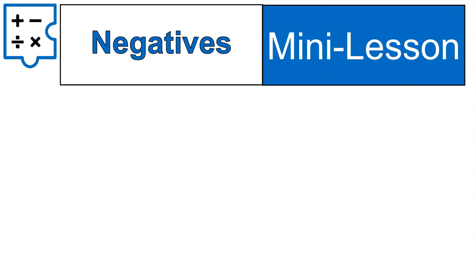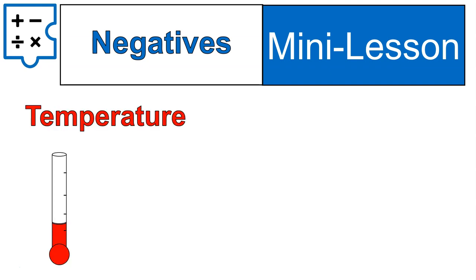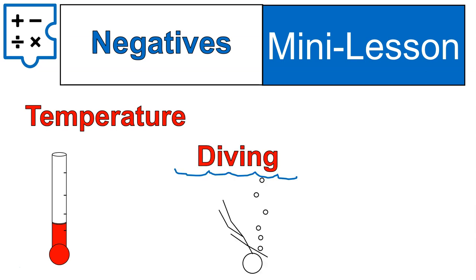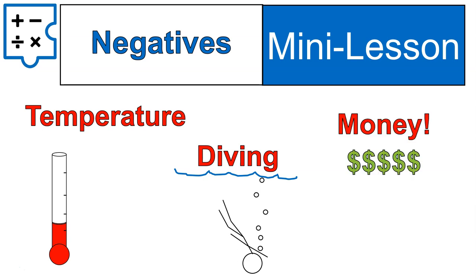First off, the most basic type of negative example I can think of is temperature because we deal with negative temperatures all the time — well, not all the time depending on where you're living. Another example is diving: if you dive down below the surface, 10 feet down would be negative 10 feet. The third example is money, because we can think of money in terms of positives and negatives — gaining and losing, or being in debt. These have practical applications in the real world.